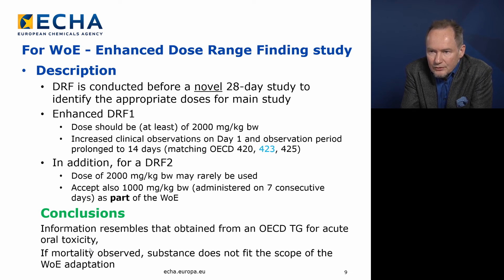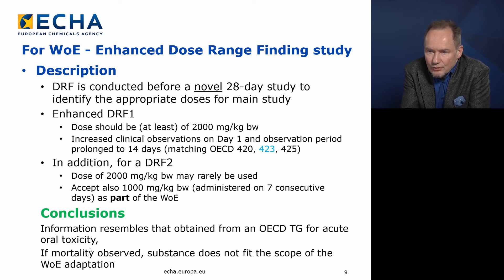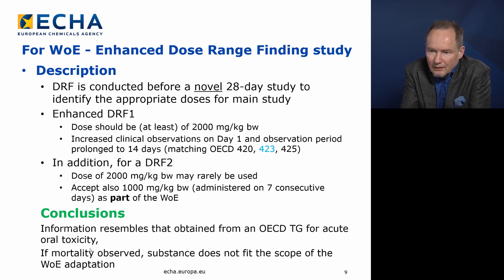The duration of the dose range finder is usually 14 days and a small group of animals is used in order to observe any effects. A dose range finding study can tell us something that comes very close to the acute oral toxicity study, provided that the recording of the clinical observations — observation of any toxic effects — is carefully done. If that recording is fine, we get relatively useful information from the dose range finder.